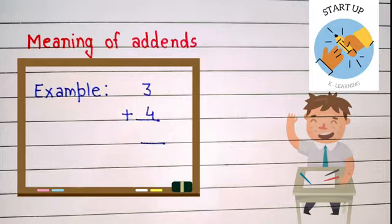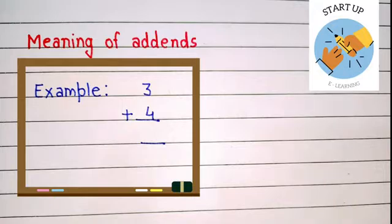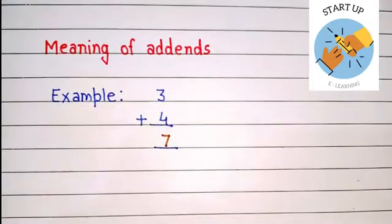We will use forward counting, and after each count we will close one finger. So 3, after that 4, 5, 6, and 7. So while adding 3 plus 4, we got the answer, or the sum of the addition.